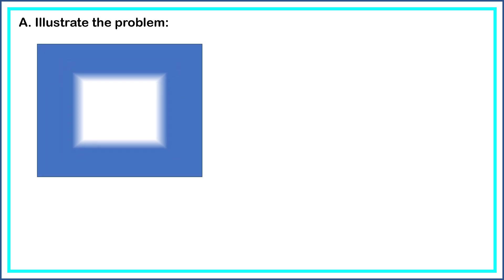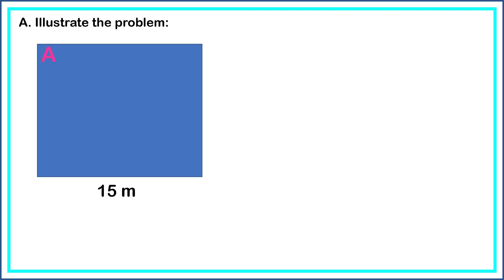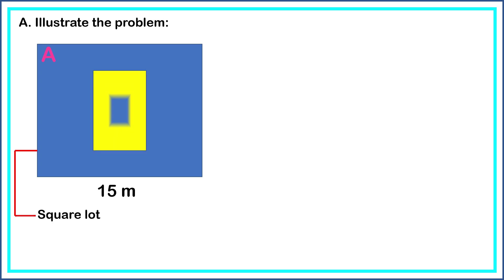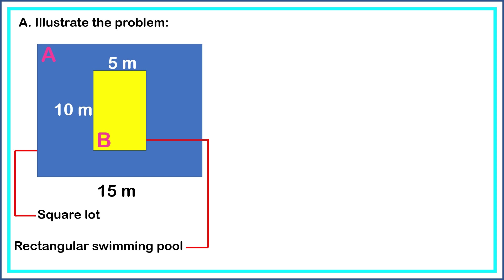The lot is in the shape of a square. We name this Figure A, with a side of 15 meters. At the center of the lot, there is a rectangular swimming pool. We name this Figure B, having a length of 10 meters and a width of 5 meters. As you can see in our illustration, there are two shapes: a square with a side of 15 meters, and a rectangle with a length of 10 meters and a width of 5 meters.